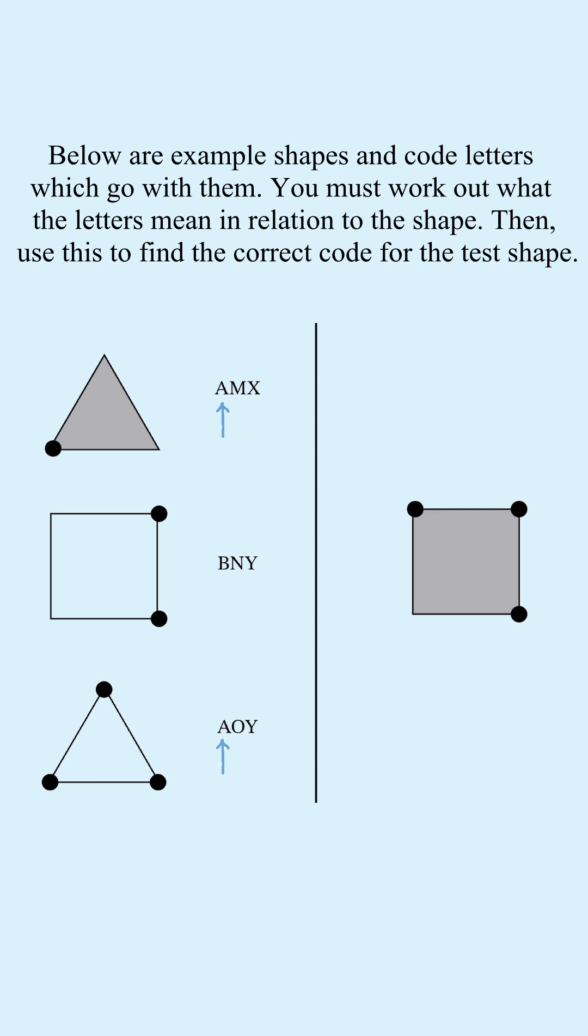The first letter is the same for these two figures, so this represents which shape makes up the figure. The second letter is different for each figure, and there are a different number of dots around each figure. So the second letter represents this.